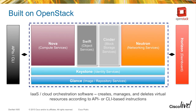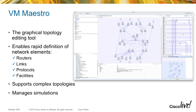VIRL consists of two primary components: a client and a server back end. The server back end runs on Ubuntu and the client is a GUI application called VIRLmaestro — a point-and-click interface where you design your network, place nodes, configure them, and set parameters. It also includes a configuration component that provides configurations into the topologies you create with VIRLmaestro.